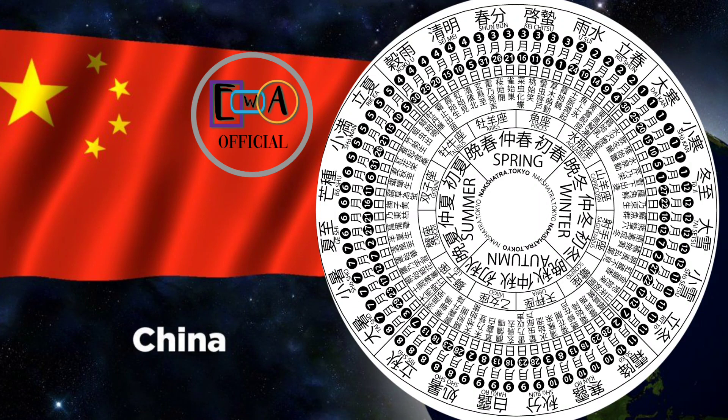The traditional Chinese calendar is a lunisolar calendar, which means that it is based on the cycles of the moon and the sun. It is used to determine holidays, festivals, and the beginning of each month.